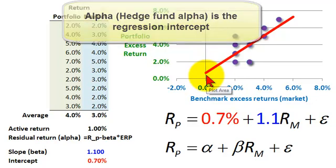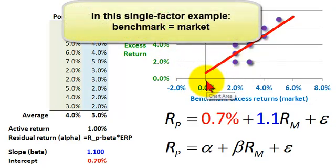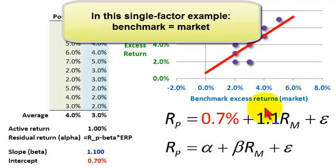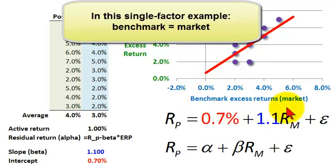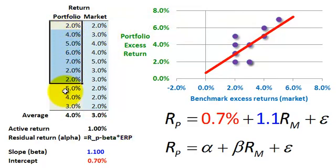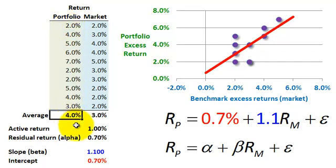Sometimes we make alpha more difficult than it needs to be. My example is simple in the sense that it's a single-factor model. I've got a portfolio — we can imagine that we're the active managers of the portfolio. Instead of several factors, we're going to assume only a single factor: the benchmark. I made up some numbers over here across 10 periods. Our average excess return is 4% — by excess return, I mean the return over the risk-free rate.